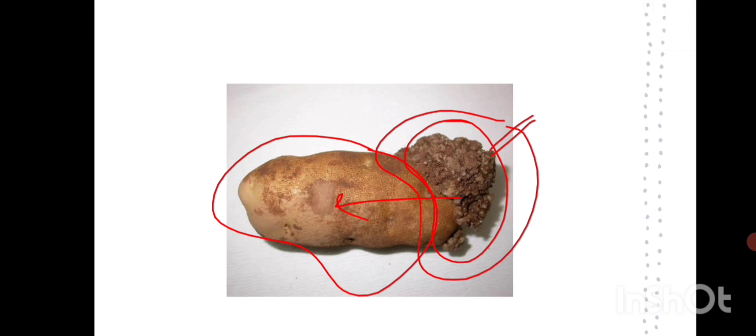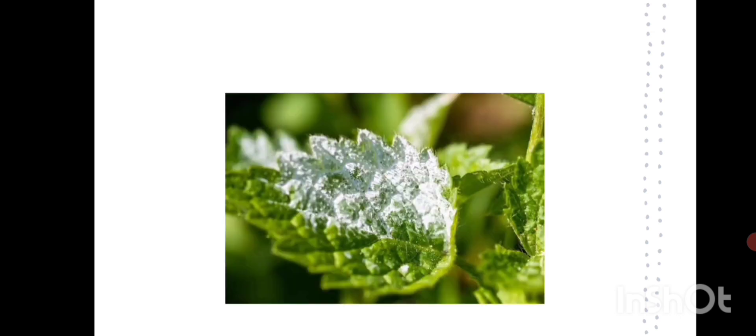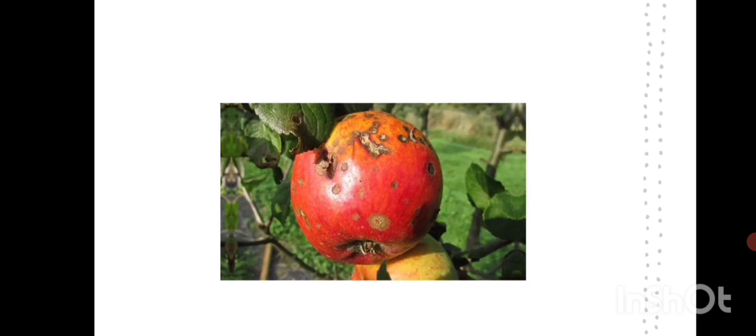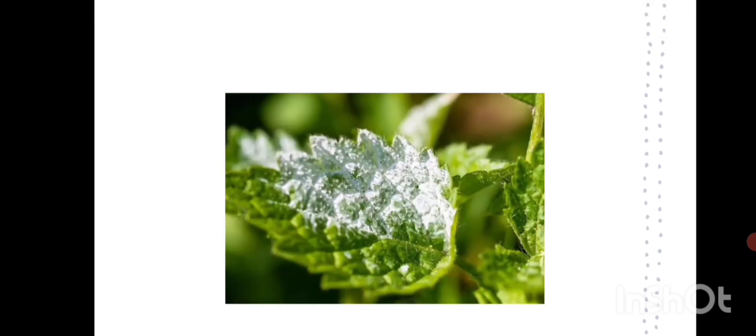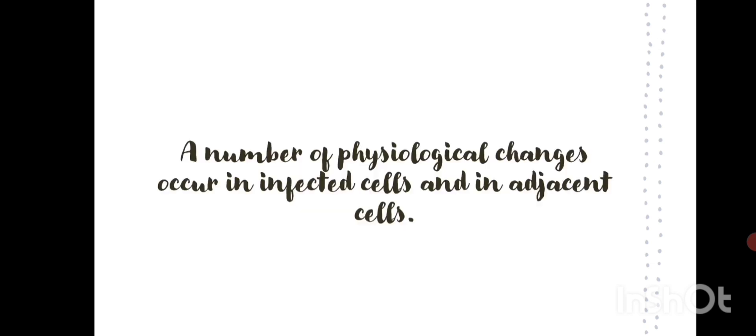Another example is apple scab disease. Apples get these warts and patches that develop as a kind of hypersensitive reaction that protects the whole fruit. And this one is powdery mildew. These are the most common examples that can be easily seen in our surroundings.